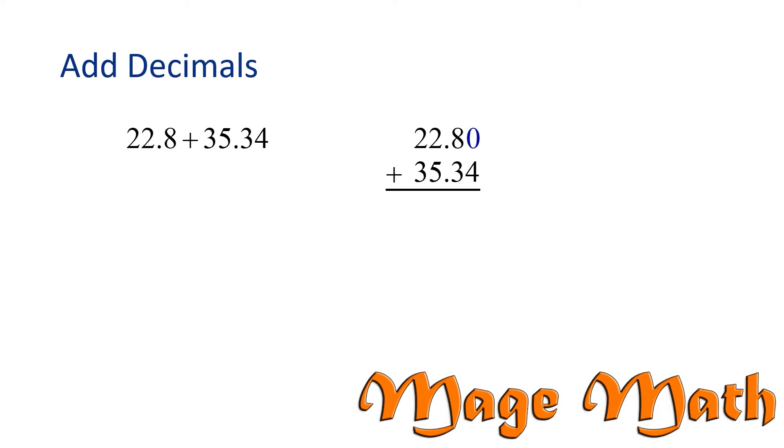Okay, let's start adding on the far right. 0 plus 4 is 4. 8 plus 3 is 11, but we need to carry the 1. Now we can write the decimal point.